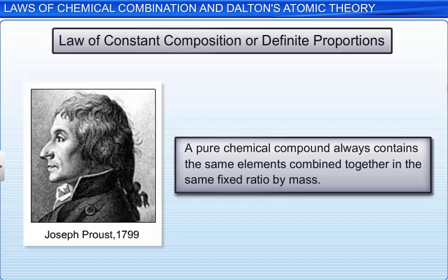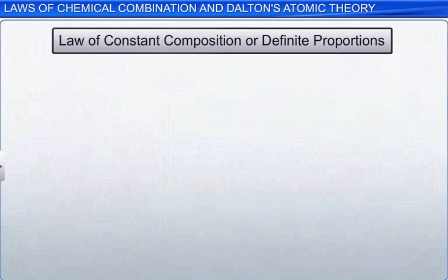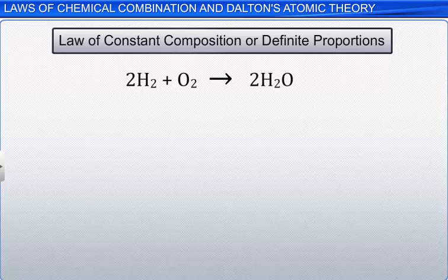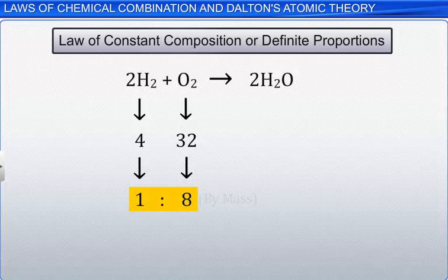This law states that a pure chemical compound always contains the same elements combined together in the same fixed ratio by mass. For example, the water we get from any source, such as river, well, lake, sea, or from any other place, always contains hydrogen and oxygen elements in the ratio of 1 is to 8 by mass.